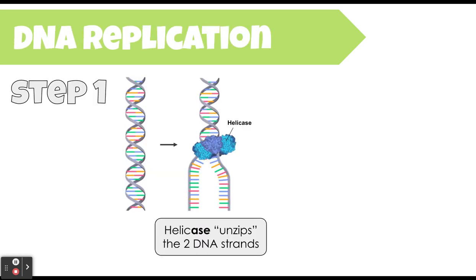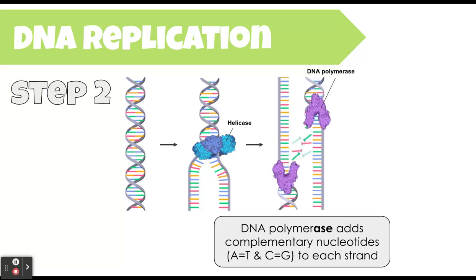How DNA gets replicated during the S phase: step one is that we need an enzyme called helicase — we know it's an enzyme because it ends in the letters A-S-E. Think of helicase as the zipper; it is going to unzip the two connected strands of DNA. After it starts unzipping, the single-stranded DNA is exposed, and a new enzyme called DNA polymerase will come in to add complementary nucleotides, following complementary base pair rules. If polymerase sees an A nucleotide, it adds a T; if it reads a C, it adds a G, and so on.